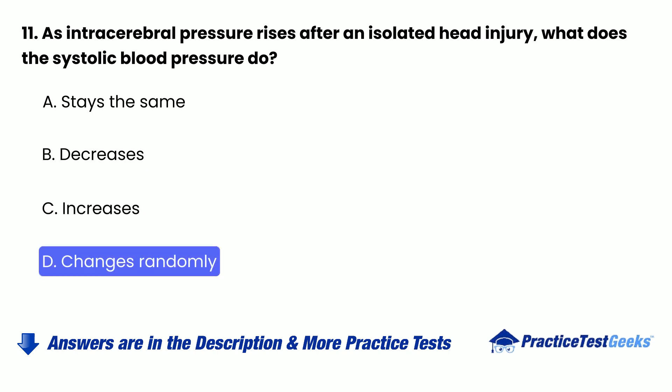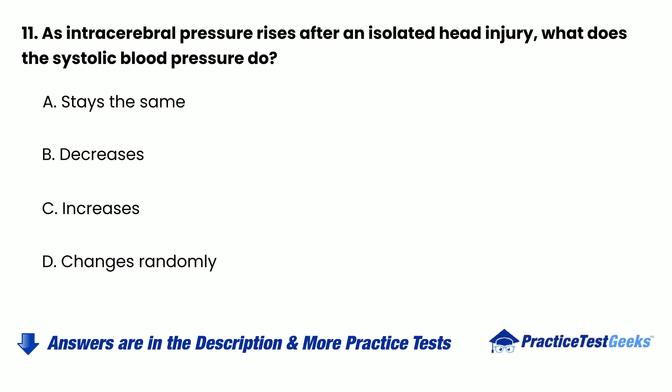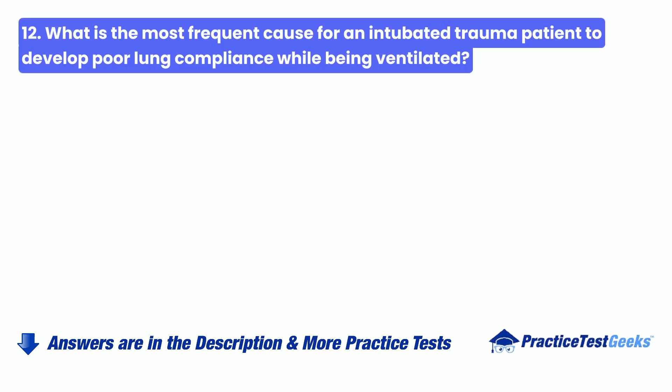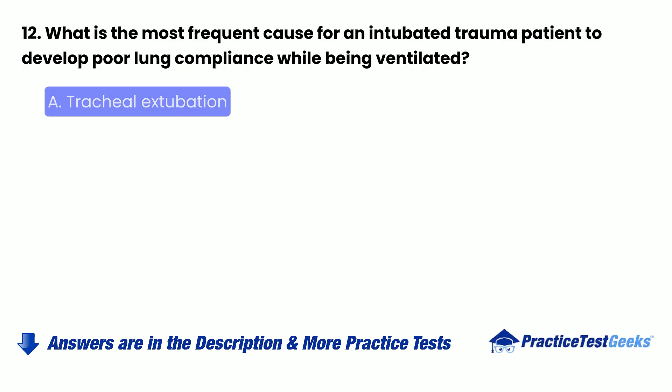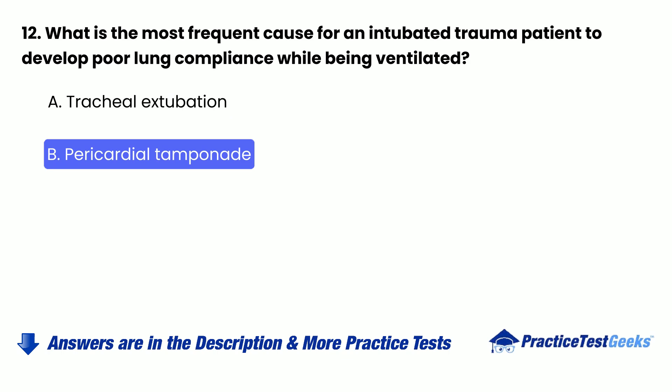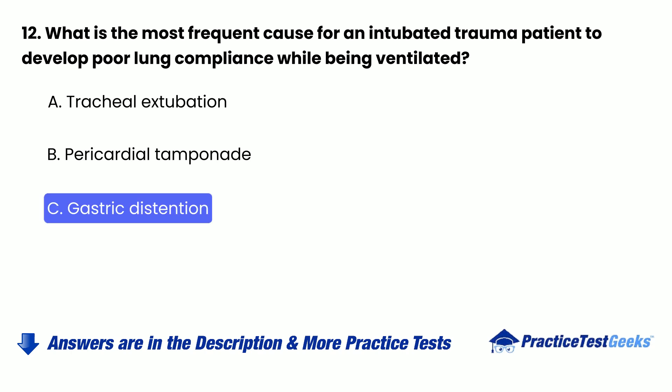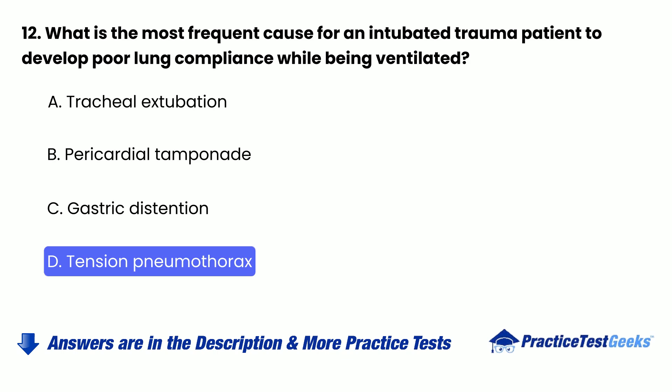Question 12: What is the most frequent cause for an intubated trauma patient to develop poor lung compliance while being ventilated? A. Tracheal extubation. B. Pericardial tamponade. C. Gastric distension. D. Tension pneumothorax.